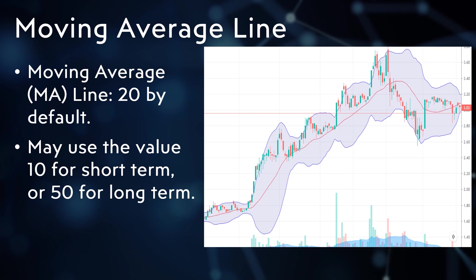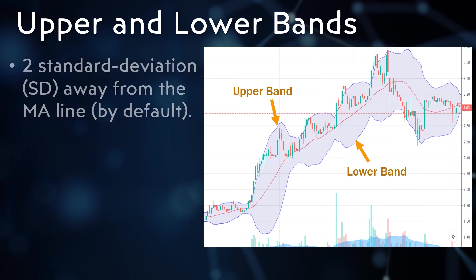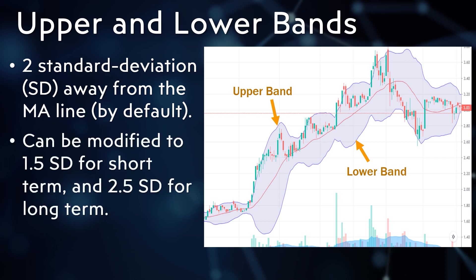While some long-term investors prefer to use a 50-day MA, for simplicity we will use the default value of 20. The other components are the upper and lower bands. The line above the MA is called the upper band, while the line below is called the lower band. By default, both bands are two standard deviations away from the MA line. Standard deviation is the most common measurement of volatility.